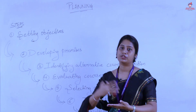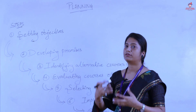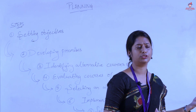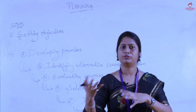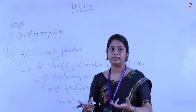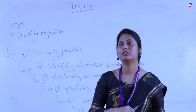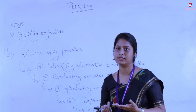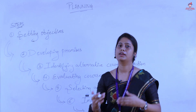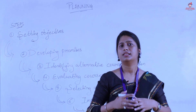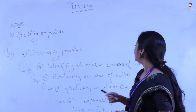The second step is called developing premises — these are assumptions made for the future regarding achieving the objectives of our organization. For example, Ria might assume she will have 10 to 15 guests, and the budget can be three to five thousand. For organizations wanting to increase sales, the premises could include changes in government taxation, pricing policies, or demand and sales forecasts. All such assumptions are called developing premises.